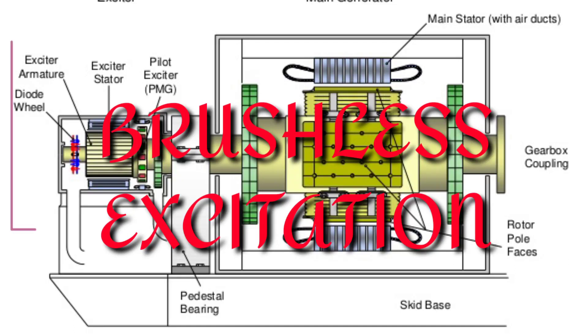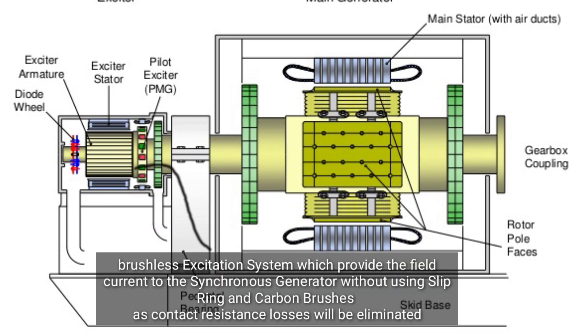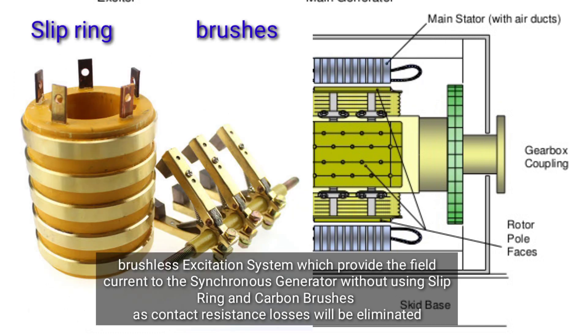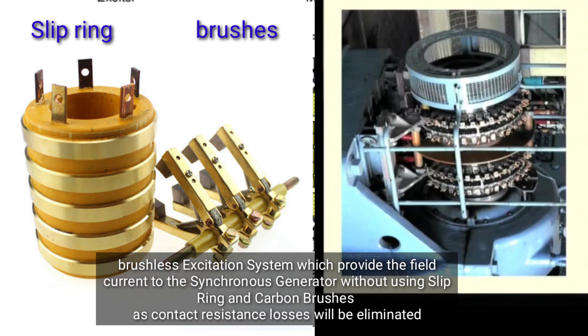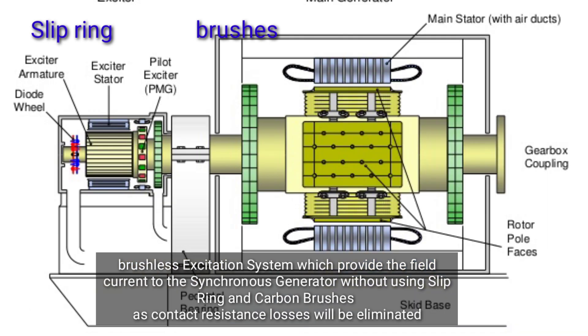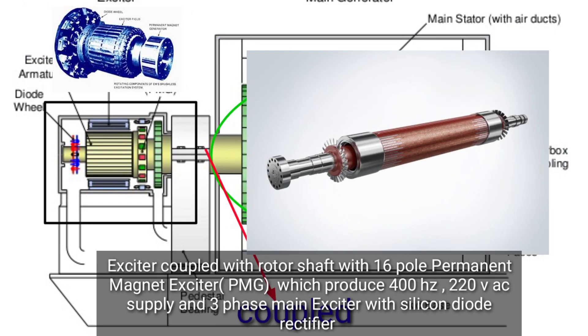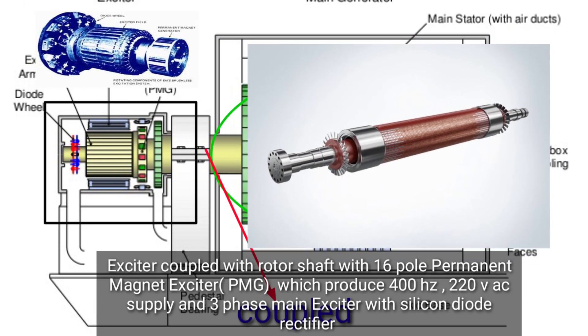This is a brushless excitation system which provides the field current to the synchronous generator without using slip rings and carbon brushes. As contact resistance losses will be eliminated, the brushless exciter system is coupled with the rotor shaft.